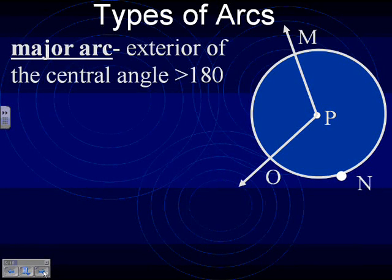So an example of what one of these could be, it's exterior to the central angle. So our central angle is here, so that major arc would be on the outside. So like M, N, O. So what I just highlighted up there, that would be a major arc, because it's outside of the central angle.